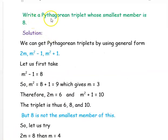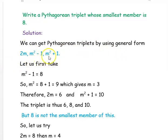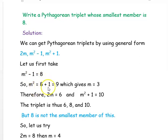The next example is: write a Pythagorean triplet whose smallest member is 8. We can get Pythagorean triplets using the general form 2M, M²−1, and M²+1. First, let's take M²−1 = 8. Adding 1 on both sides gives M² = 9, so M = 3.